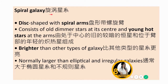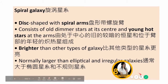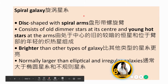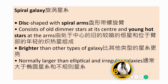There are three types of galaxies. The first one is spiral galaxies. Spiral galaxies have this distinctive spiral shape. They consist of older, dimmer stars at the centre and young, hot stars at the arms.